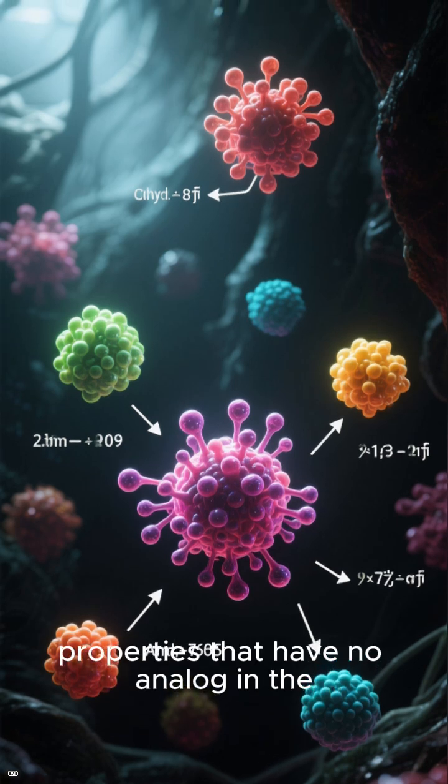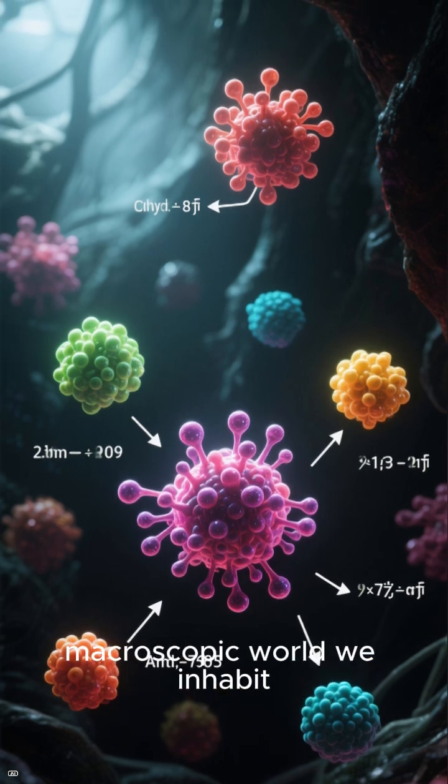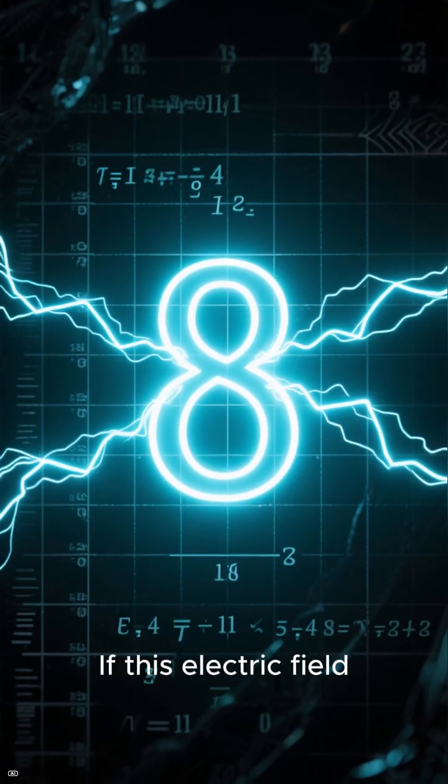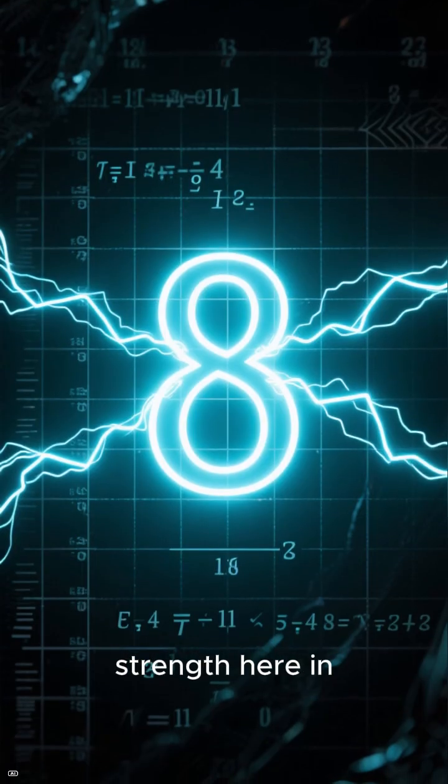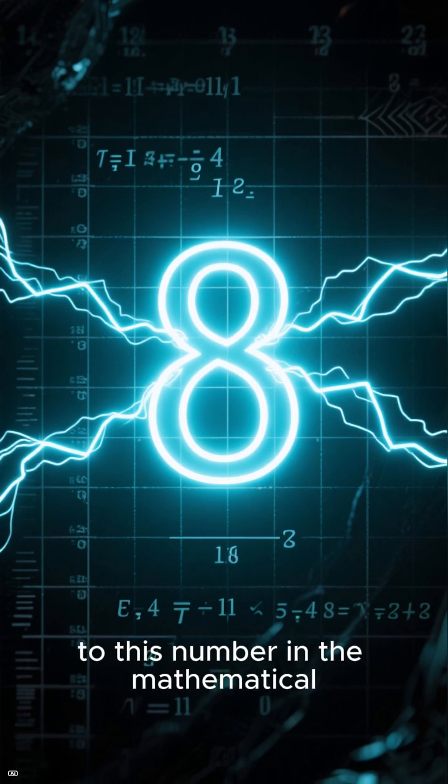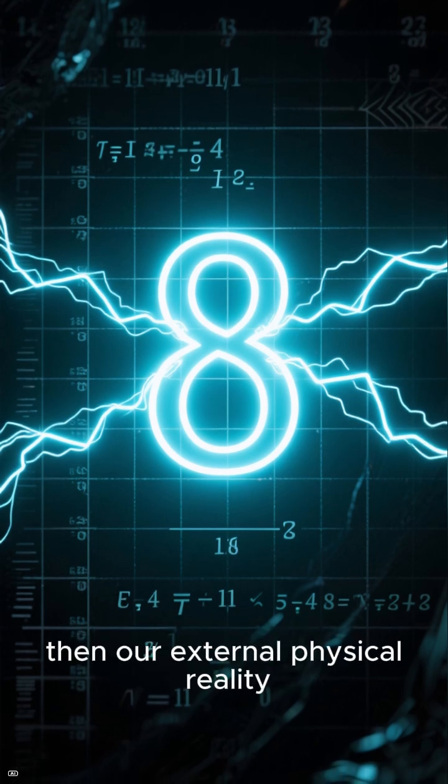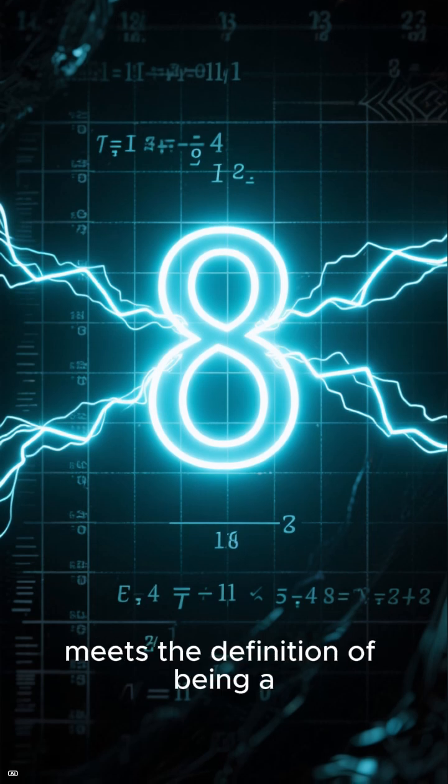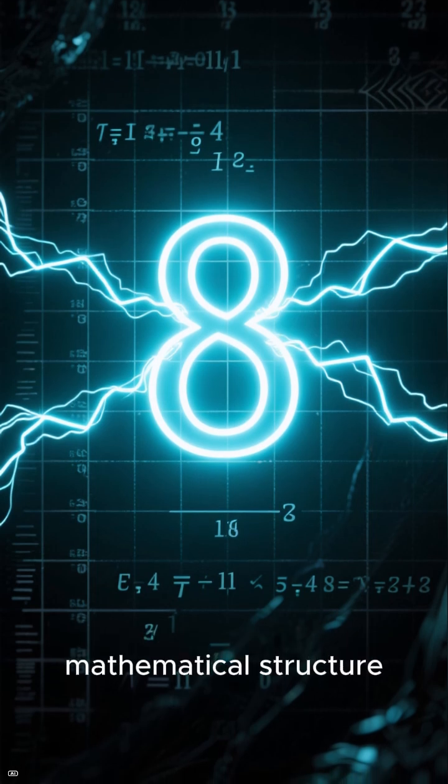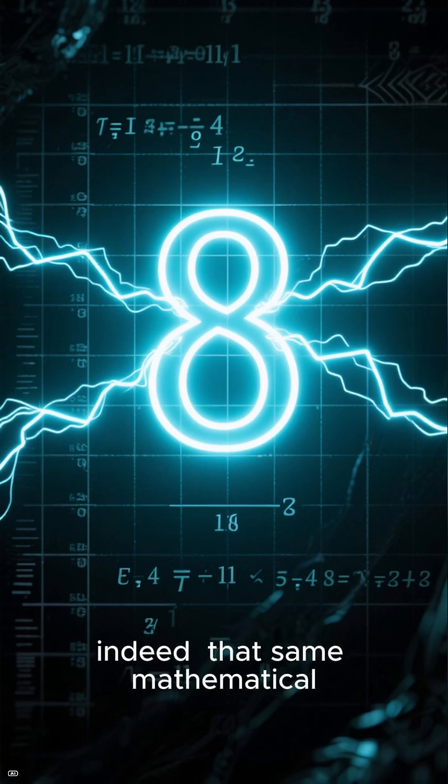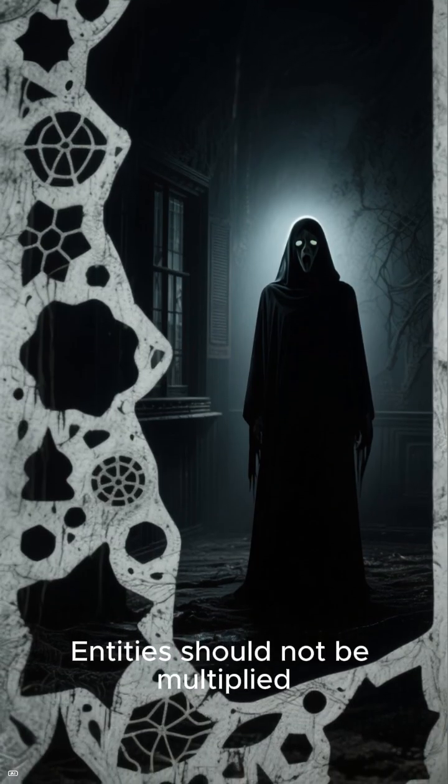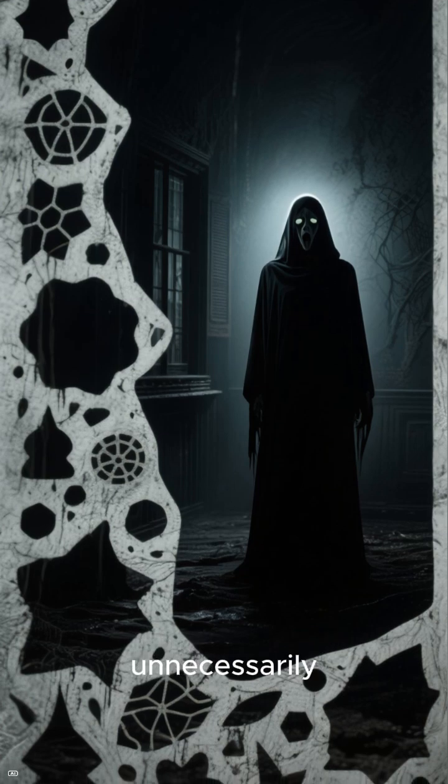Max Tegmark said if this electric field strength here in physical space corresponds to this number in the mathematical structure, for example, then our external physical reality meets the definition of being a mathematical structure—indeed that same mathematical structure. William of Ockham said entities should not be multiplied unnecessarily.